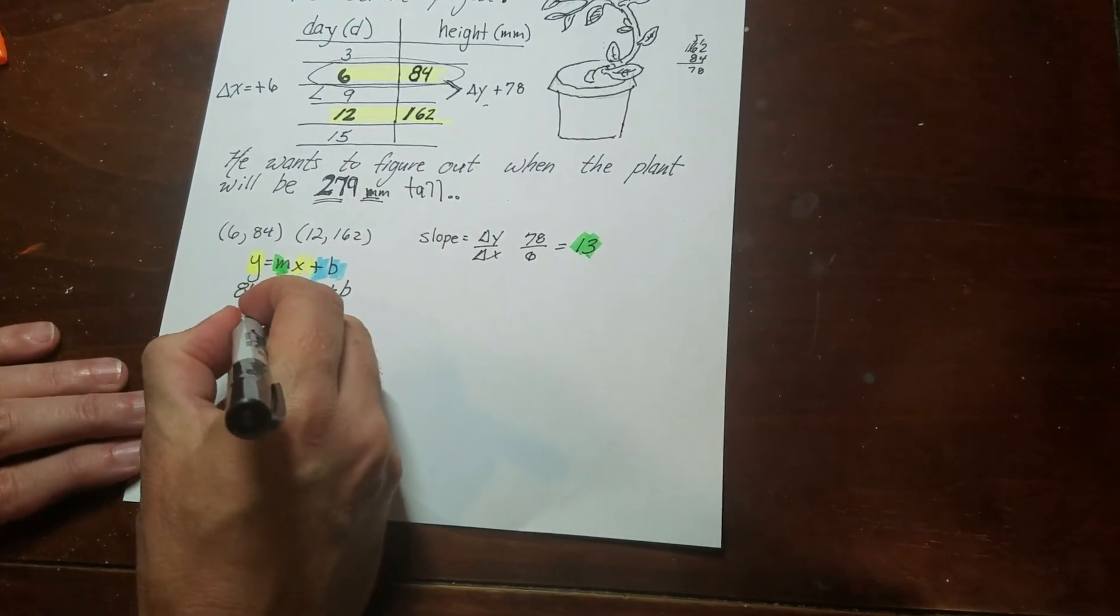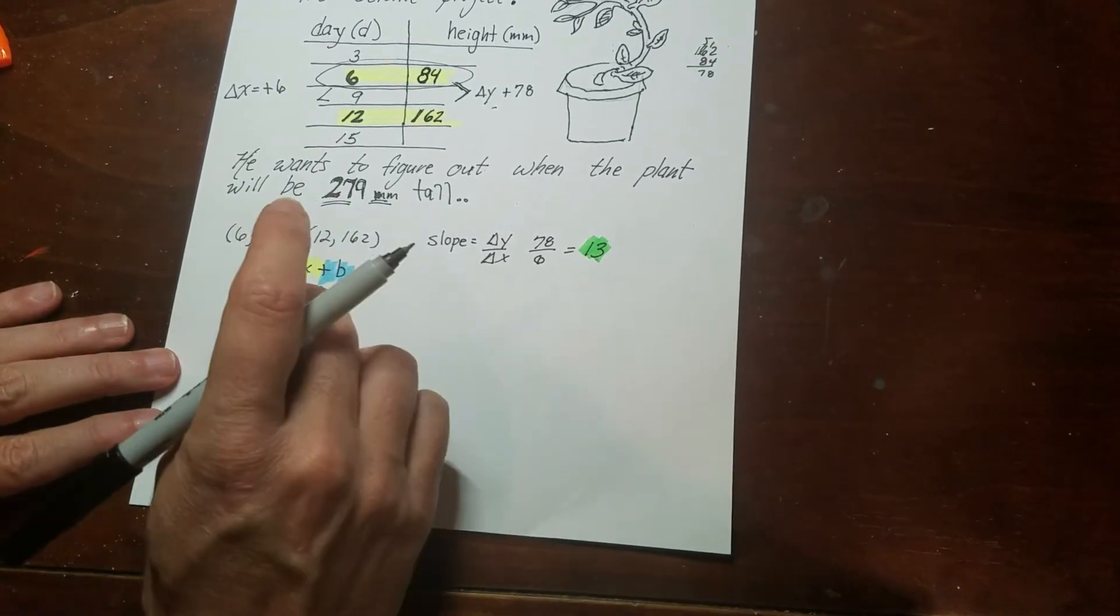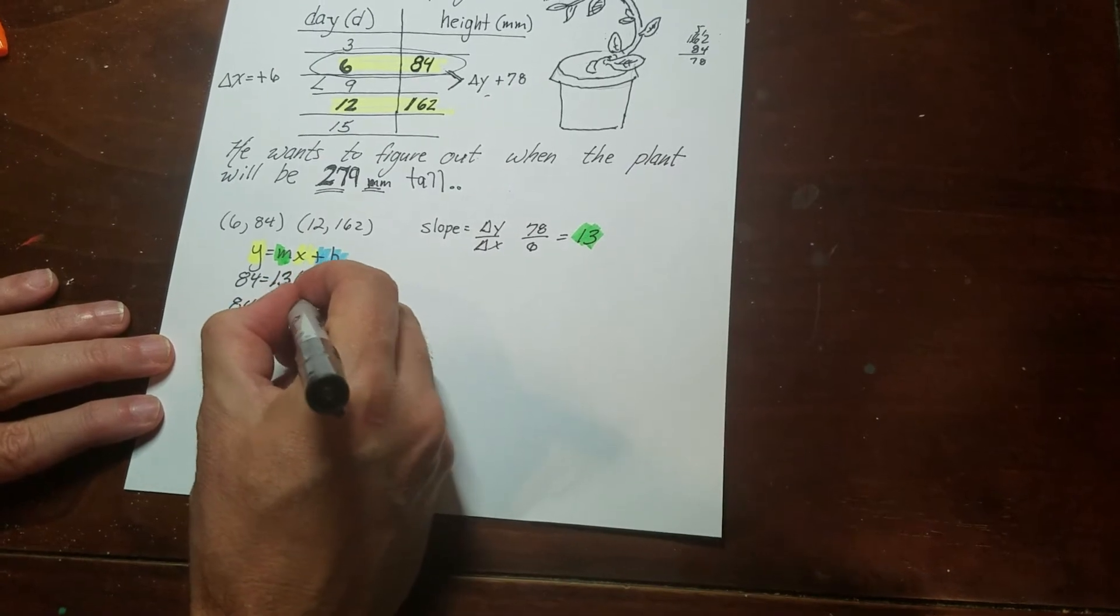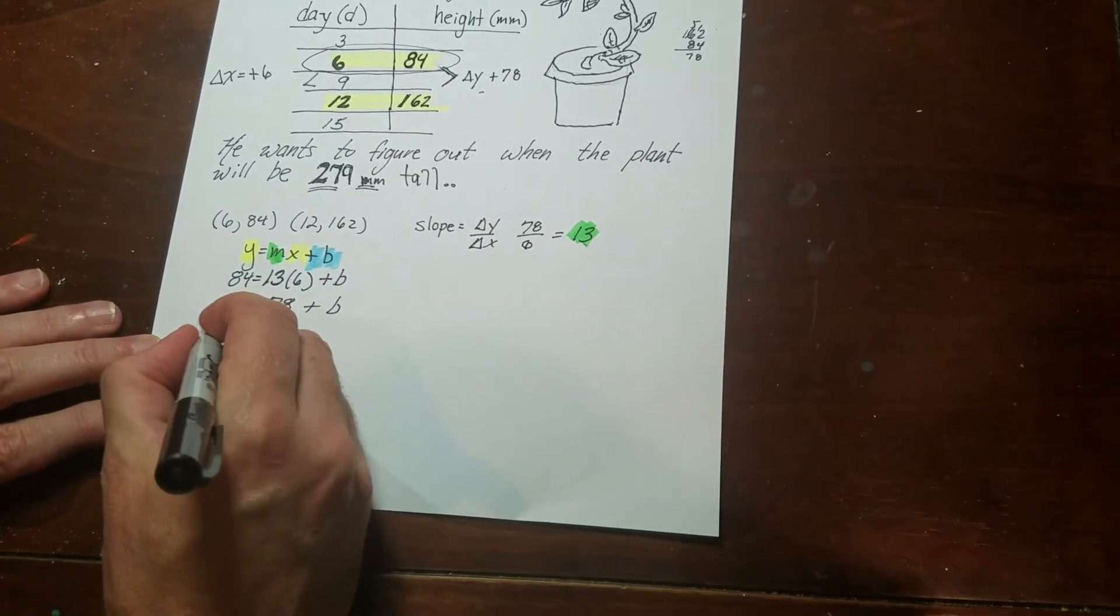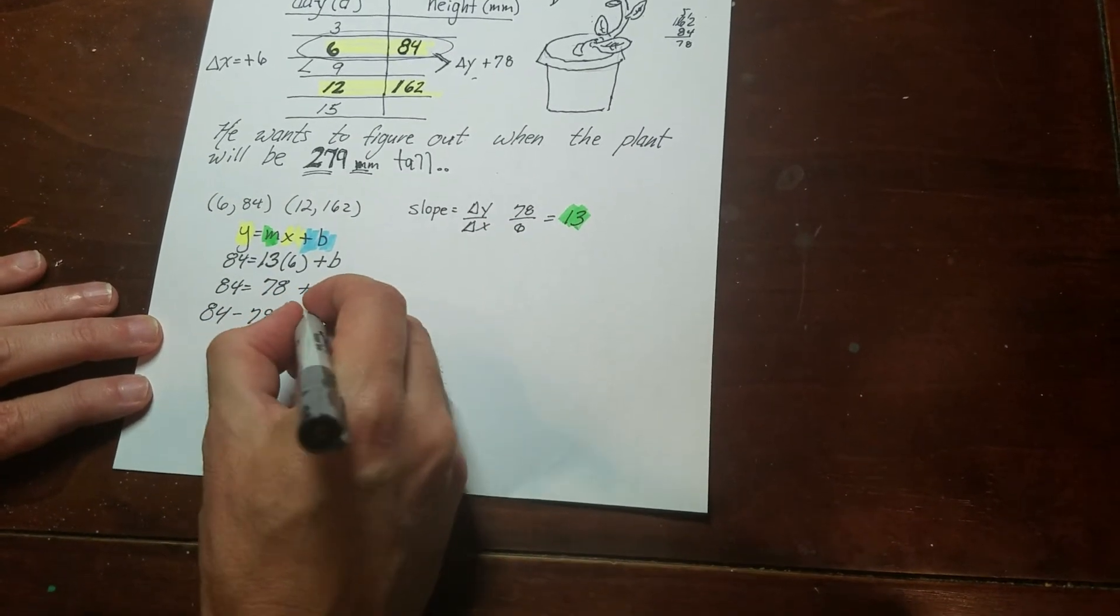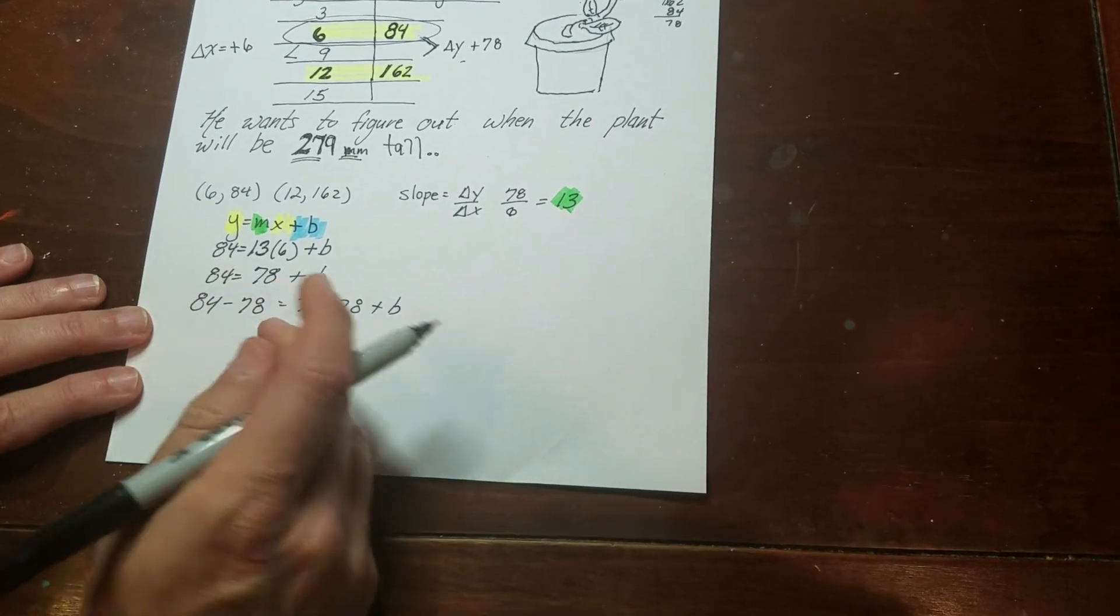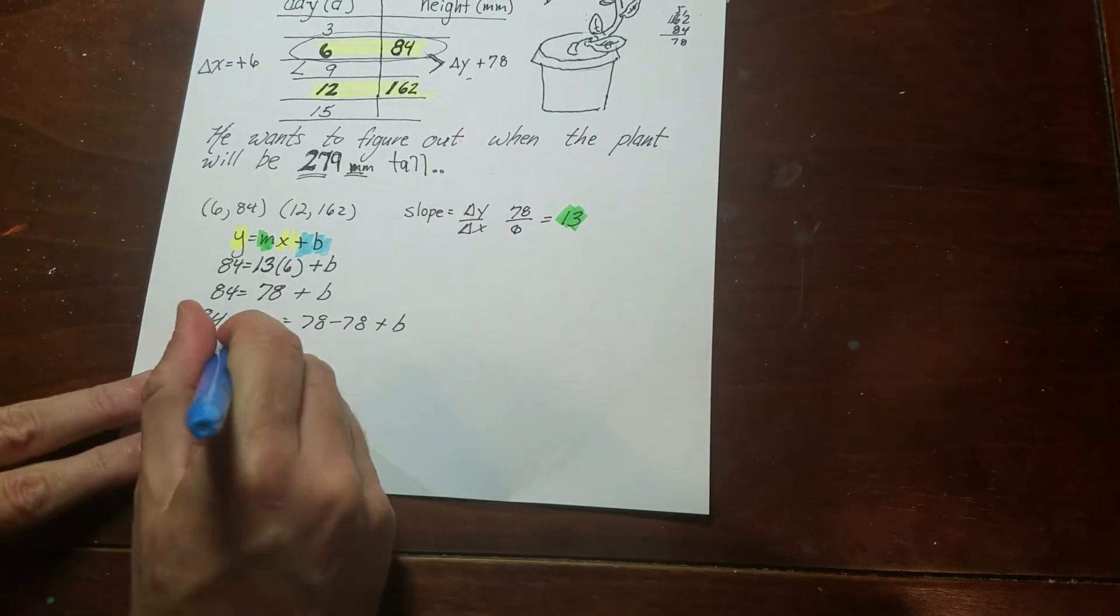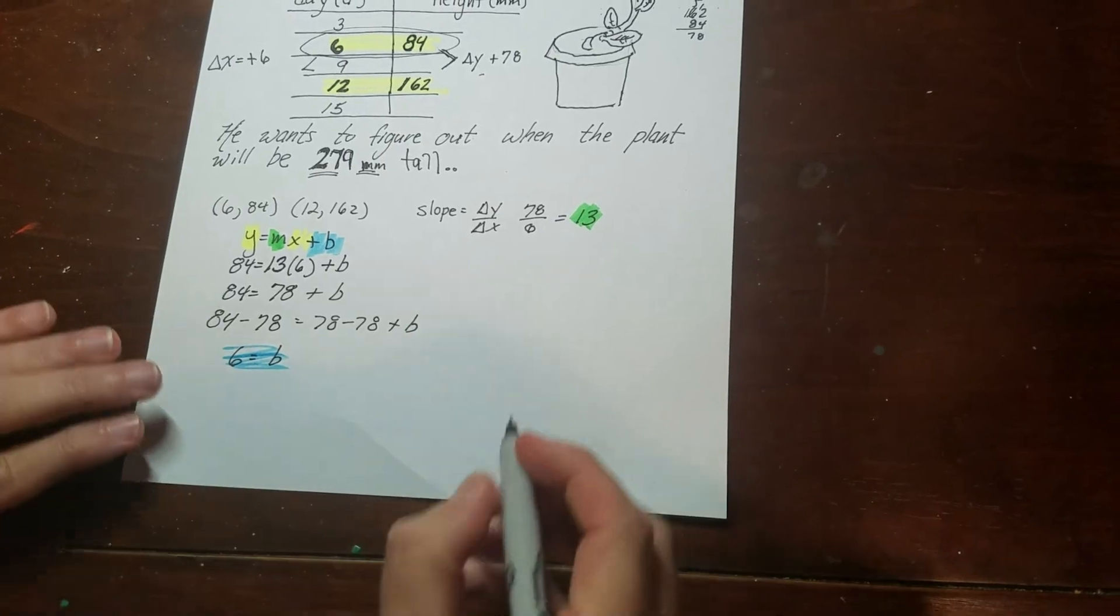So 84 is equal to 13 times 6. So that's 60 plus 18. That's 78 plus b. And I go ahead and solve this equation. So this is going to come to 6. So it looks like my b term is 6.